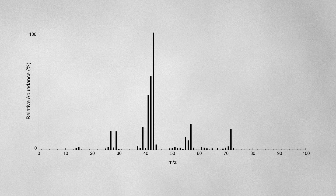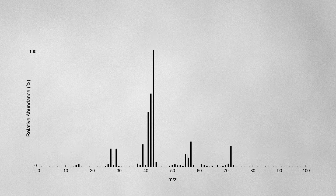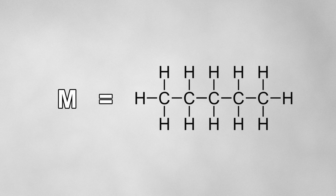This will give a mass spectrum which provides information about the structure of the molecule. In the world of mass spectrometry, our sample molecule is denoted with the letter M. Let's look at pentane as an example and start at the beginning with ionization. There are several ways a molecule can be ionized.